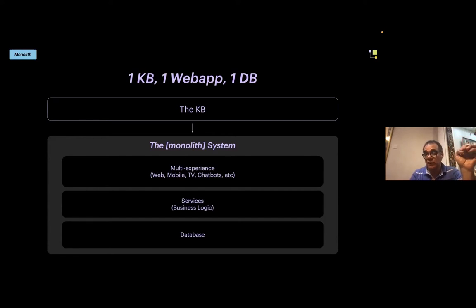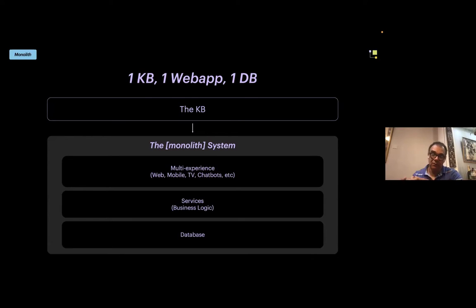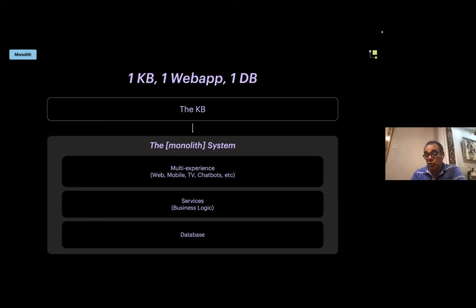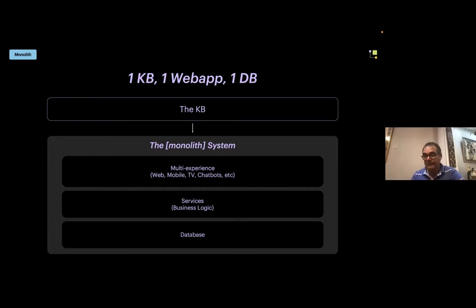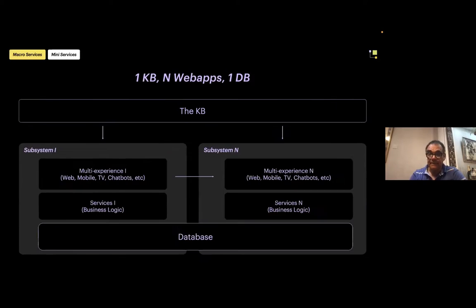An example of working with a monolith is having one knowledge base, one web app, and one database. You may have a web app, mobile app, or chatbot — it doesn't matter which channels you use to distribute the applications. What matters is how they are built. This deployment is typically one web app and one database, with a single integration, and the design system is also only one, presenting no inconveniences.